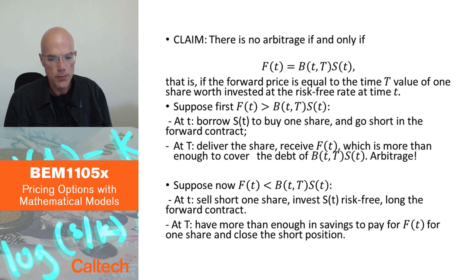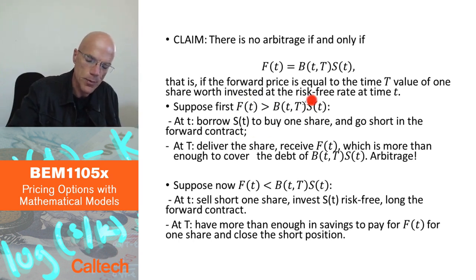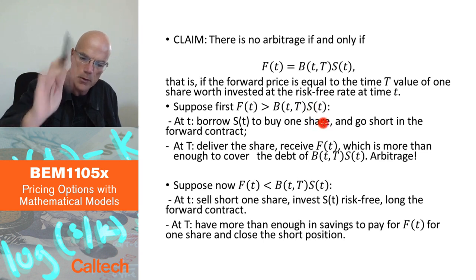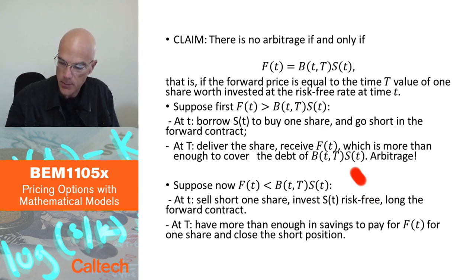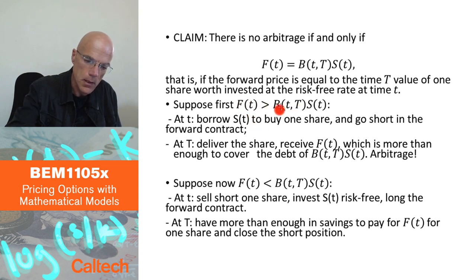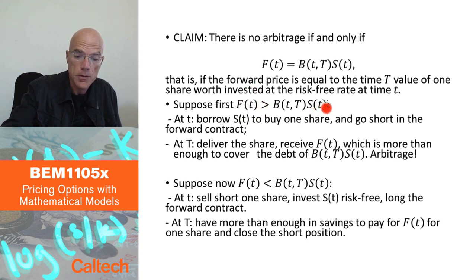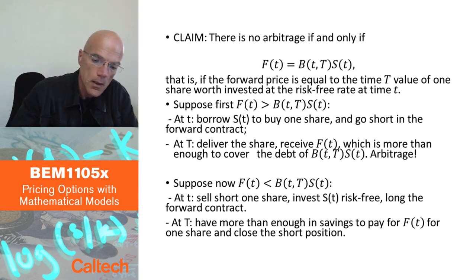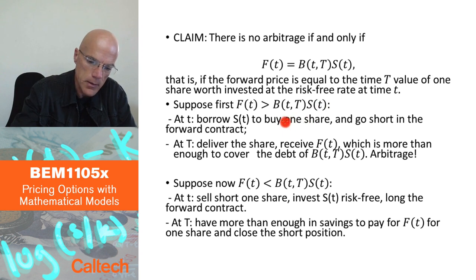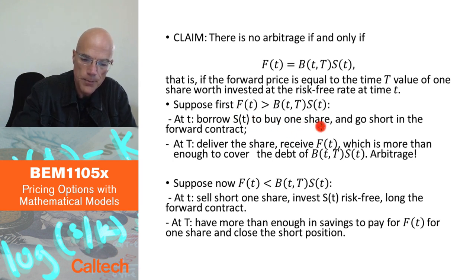Suppose first that the forward price is strictly larger than B(t,T)·S(t). We always go with the logic: buy cheap, sell expensive. Since the forward contract is relatively expensive and the stock is cheap, I'll buy the stock and go short in the forward contract. Starting with zero money, I borrow S(t) today at small t to buy one share, and go short in the forward contract — selling the forward contract means going short in it.